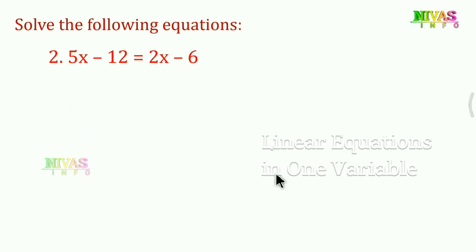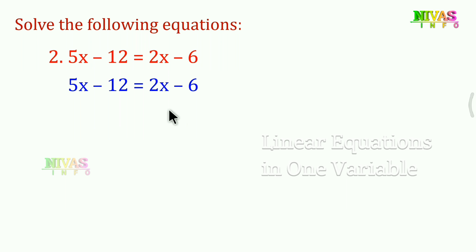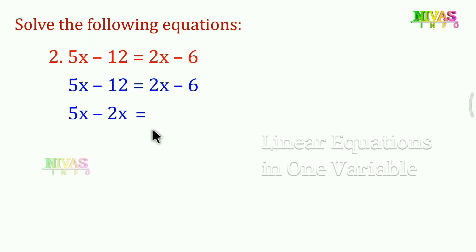The next question is very simple. 5x minus 12 is equal to 2x minus 6. We have two variables on two sides. First, transpose: 5x minus 2x is equal to negative 6 plus 12.